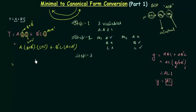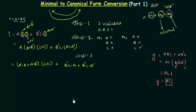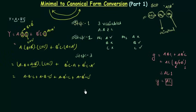Now we use the distributive law to open the brackets. We get: A·(B or B')·(C or C') expands to ABC, ABC', AB'C, AB'C'. And from the second min term B'C·(A or A') expands to AB'C and A'B'C. Now we have all the variables — whether in normal or complemented form — in each min term. So this is the canonical form, but we still need to check it.